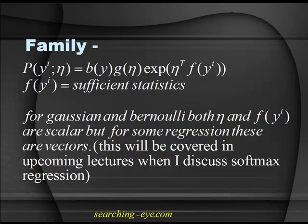For Gaussian and Bernoulli both eta and f(y_i) are scalar, but for softmax regression these are vector quantities. Both f(y_i) and eta will come out to be vector quantities in softmax regression, which will be covered in lecture number 8 or 9.